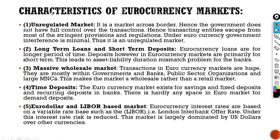Now we'll go through the characteristics of Euro currency markets. Number one: unregulated market. The Euro currency market is a market across borders. Hence, the government does not have full control over the transactions, and transacting entities escape from most of the stringent provisions and regulations. Under Euro currency, government interference is minimal. Thus, it is an unregulated market.